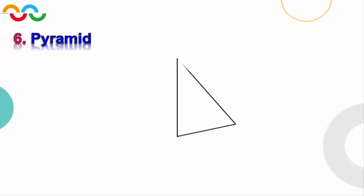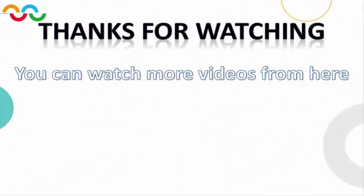Then from the opposite side we draw another triangle which is identical to the first one. Finally we draw the pyramid, and we find that the quadrilateral pyramid consists of four triangular faces and one square base. I hope that explanation was helpful. Thanks for watching and listening — see you next time!